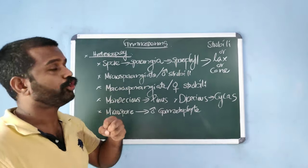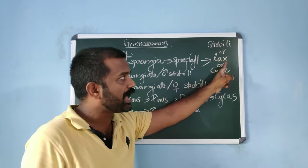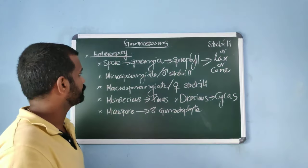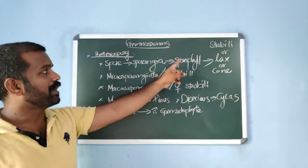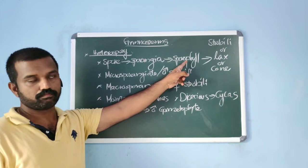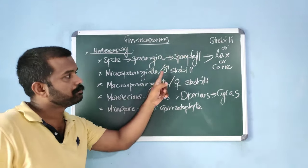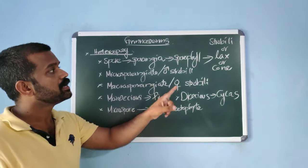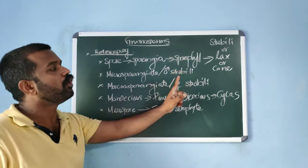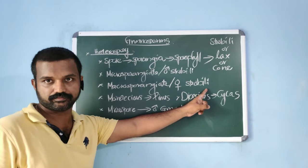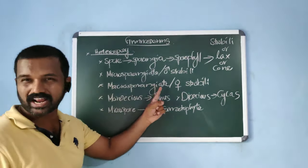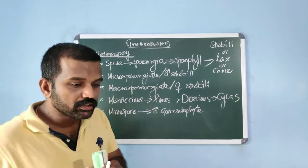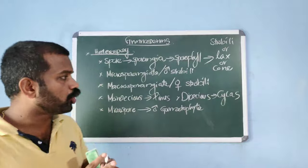Sporangia are borne on sporophylls. Sporophylls form compact structures known as strobili, or cones — all three terms are given in NCERT. Microsporophylls form male strobili, also known as microsporangiate cones. Megasporophylls form female strobili, also known as megasporangiate cones.